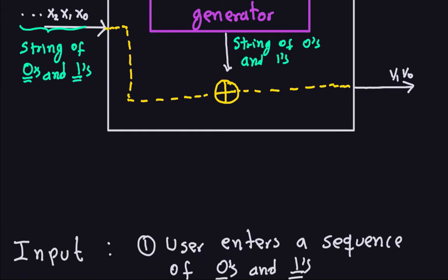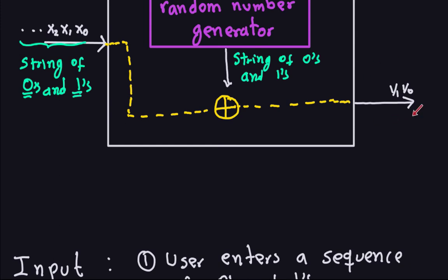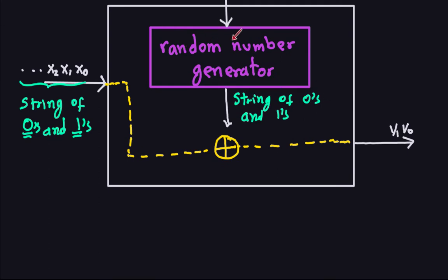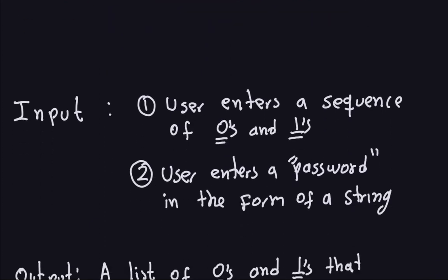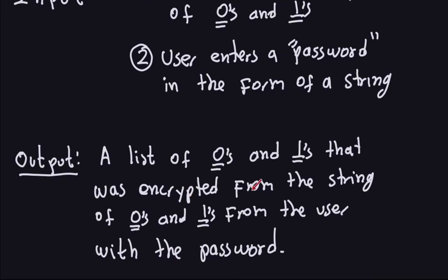The output of the program is the encrypted sequence — the result of XORing the random sequence from the random number generator with the input from the user. So the output should be a list of zeros and ones encrypted from the user's binary string using the password, where the password is what generates the random sequence of zeros and ones.